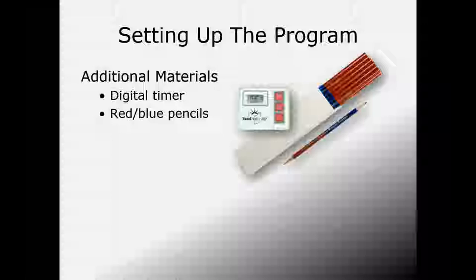When setting up the program, you need a few additional items. You'll need a digital timer—only one, because the teacher is in charge of timing for all students. This is different from Read Naturally Encore where each student needs their own timer. GATE is for students who aren't quite ready for that independence, so the teacher just needs one digital timer that is exact and doesn't count down the seconds. These are available for purchase from Read Naturally or elsewhere.